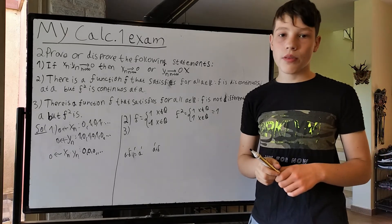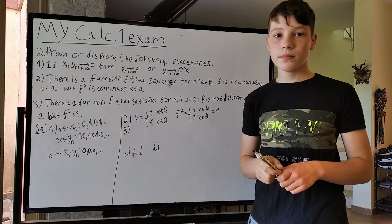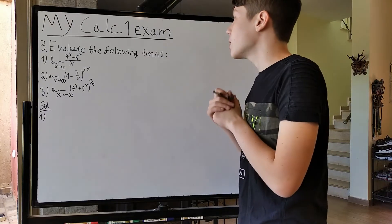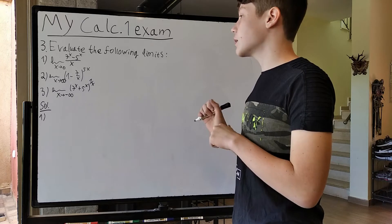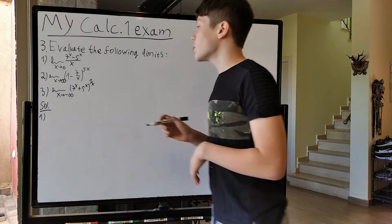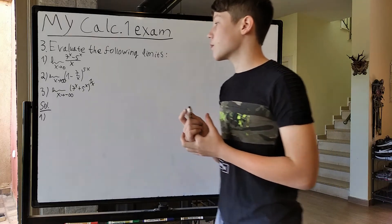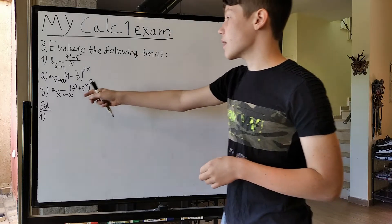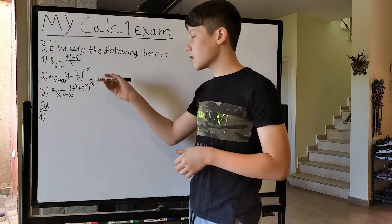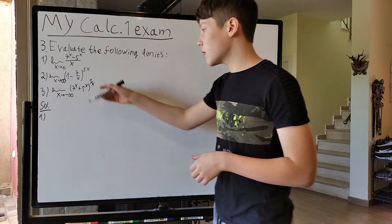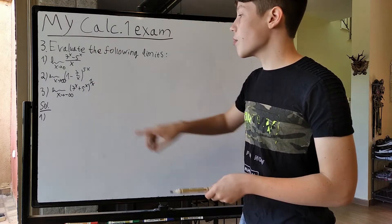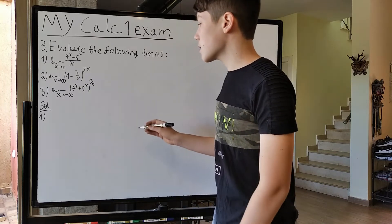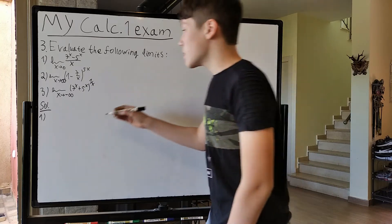Now let's move on to number 3. Question 3: we need to evaluate the following limits. Number 1: the limit as x → 0 of (7^x − 5^x) / x. Then, as x → ∞: (7/x)^(5x). And the third: the limit as x → −∞ of (7^x + 5^x)^(1/x). So let's begin.